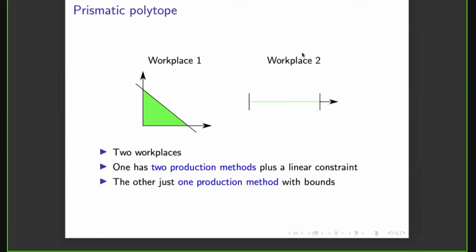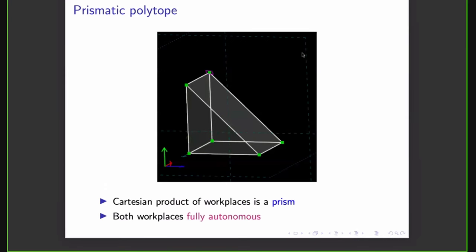So suppose we have two workplaces, workplace 1 and 2. And the first one has two production methods plus a linear constraint. So the linear constraint here is the diagonal line. And this could be, for example, that the number of shifts are limited. So we only have a certain number of shifts per week. And the other workplace is just an interval on a single production method. So if we form the cartesian product of these two workplaces, we get a prism. And we can see just purely geometrically that they're orthogonal to each other. And therefore, we can say that they are fully autonomous.